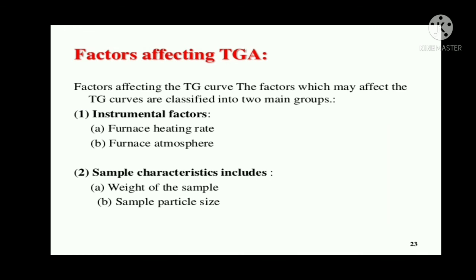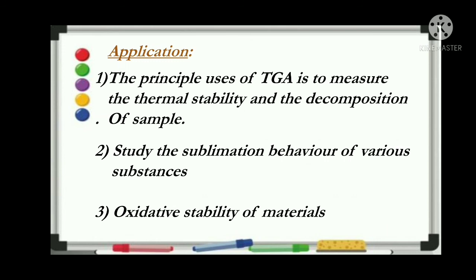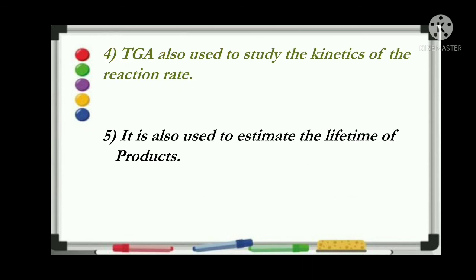Some applications of TGA are: first, the principal use is to measure thermal stability — at what temperature the decomposition of the sample occurs; second, studying the sublimation behavior of various substances and how it changes with temperature; third, oxidative stability of materials; fourth, studying the kinetics of chemical reactions — at what rate the reaction takes place and at what temperature decomposition of the material occurs; and fifth, it is used to estimate the lifetime of a product.